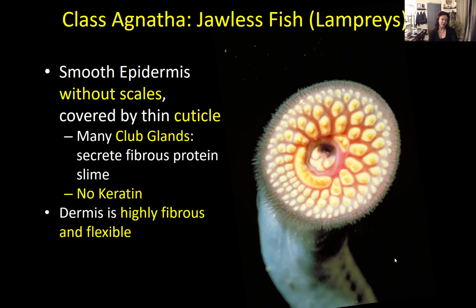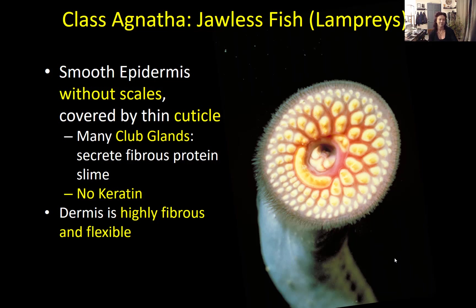The slime produced by club glands is secreted as a tiny concentrate onto the skin, and once it hits the water — since these are marine fish — it magnifies in size by about a thousand times. So a tiny bit suddenly becomes a huge gooey mess, which is a great defense against predators. The dermis is very fibrous but also very flexible, meaning the majority of those fibers are elastic fibers.